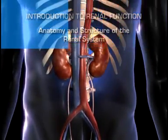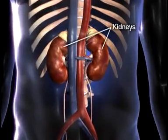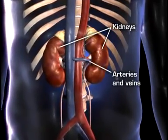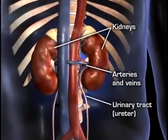The renal system consists of the kidneys, the connecting arteries and veins, and the urinary tract.